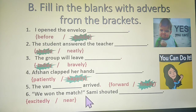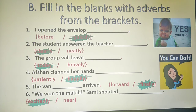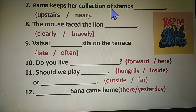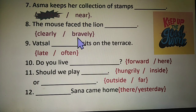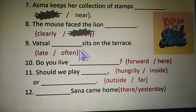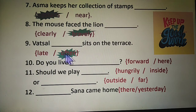The sixth question: we won the match — Swami shouted — excitedly or near? Swami shouted excitedly. This is an exclamatory sentence. Question number 7: Asma keeps her collection of stamps — upstairs or near? Asma keeps her collection of stamps upstairs. The eighth one: the mouse faced the lion — clearly or bravely? Bravely. The ninth question: Whatsal — often or late — sits on the terrace? The answer is often. Whatsal often sits on the terrace.